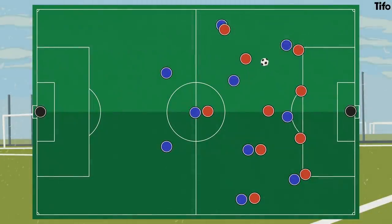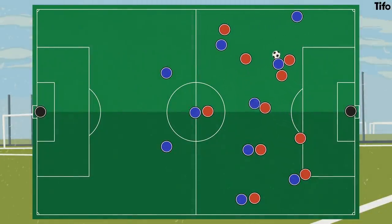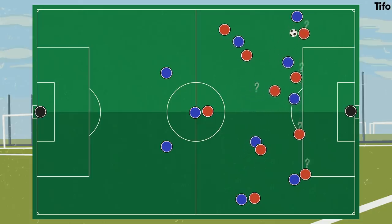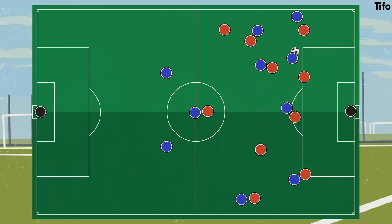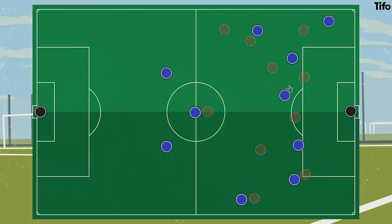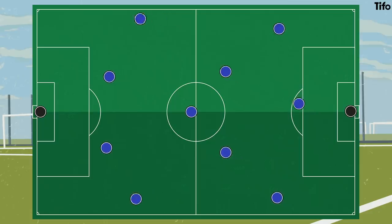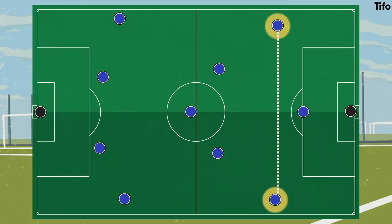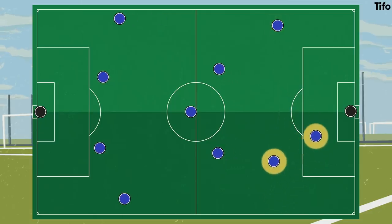Player rotations, or players swapping positions, creates confusion in opposition defences, drags defenders out of position, and ensures the ball can move from back to front as there is always a player free to receive. Rotations are different to a winger swapping sides or a striker switching positions with an inside forward.